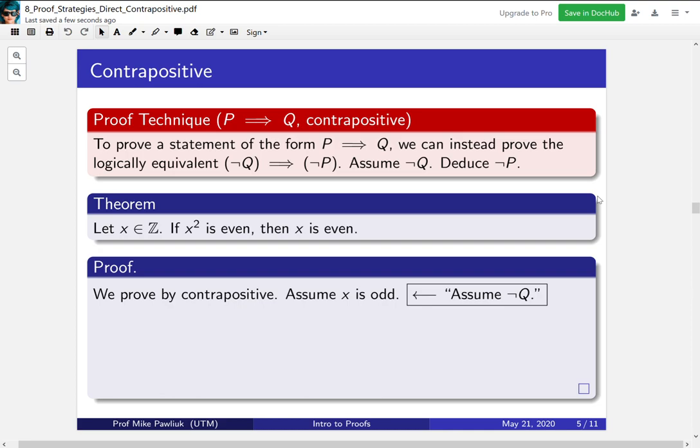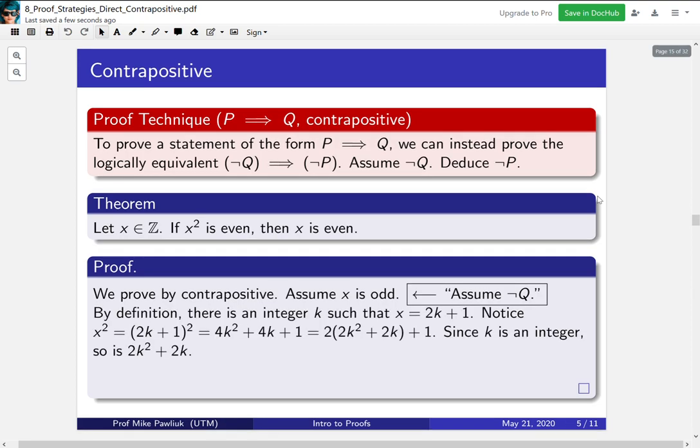Now we go through a series of logical steps to get that not P. This is going to be very similar to the previous argument. If x is odd, there's an integer k such that x is equal to 2k plus 1. You square it, do a little bit of algebra, and then you end up with, by definition, showing that x squared is odd. I'm going to leave this algebra to you. It's not anything new for us. We've seen these kinds of proofs before.